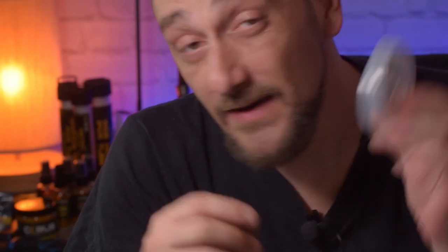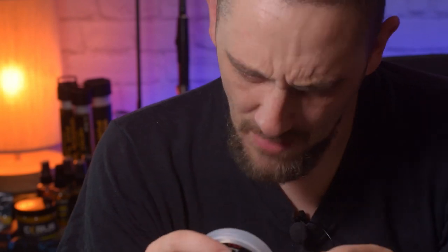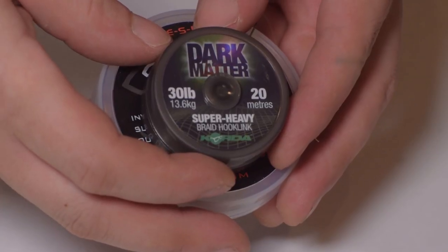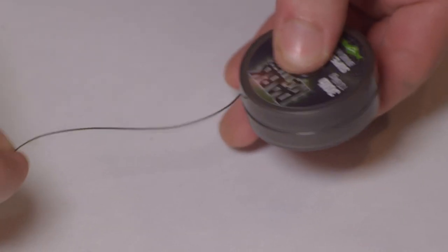If you're fishing somewhere that's got a nice sandy bottom, then you can use something like this which is a monofilament. But as I fish in a river, there's a lot of snags on the river, and I need something that's very strong. So I'm using the braid from Korda.